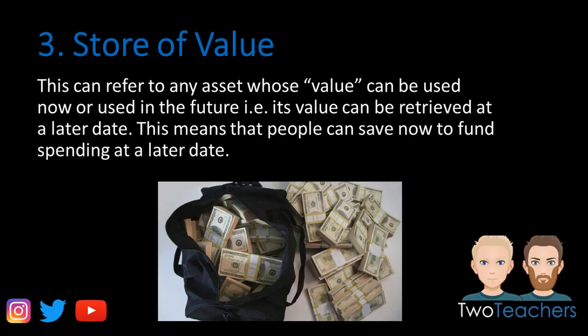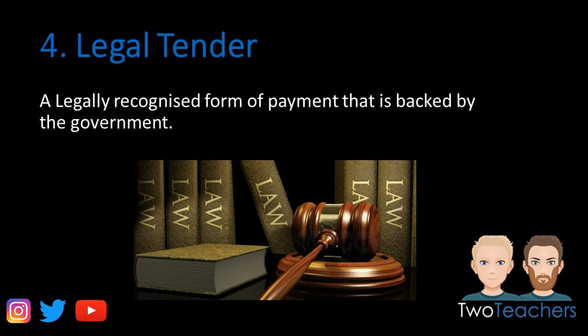The third function is store of value. This means you can save your money for a later date. Going back to the chickens example — if nobody wants to buy them, they'll die eventually and you lose that wealth. Money doesn't die. You can save it in a bank, invest it, use it later, or pass it down through the generations.